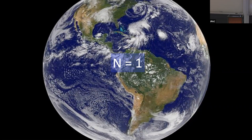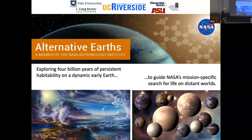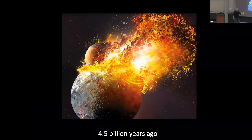NASA wisely addressed early on through the Astrobiology Institute, and even before through exobiology programs, that we really do need to study the Earth if we're going to develop search engines for life in the solar system and beyond. Our team tries to imagine that the Earth has really been many different planets — not just the Earth as we know it today, but as best as we can unravel it from the past. Our goal is to explore four billion years of persistent habitability on a dynamic early Earth to guide NASA's mission-specific search for biosignature gases in exoplanet atmospheres.